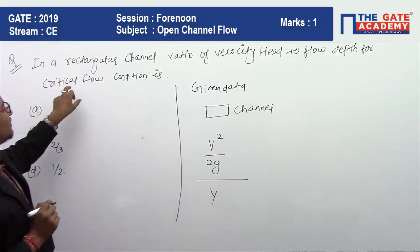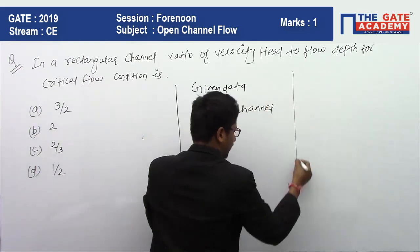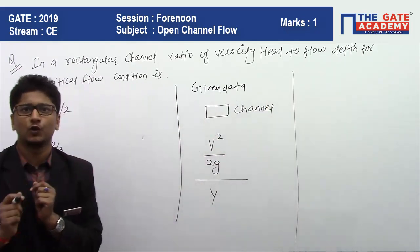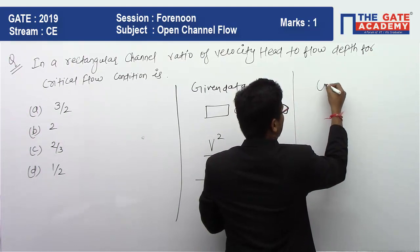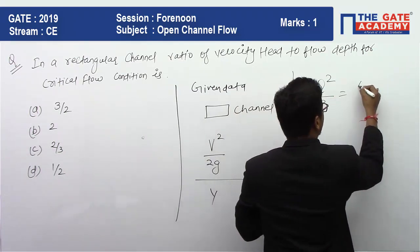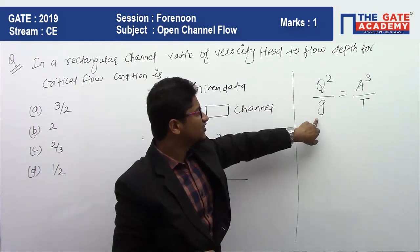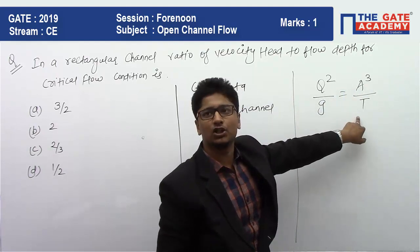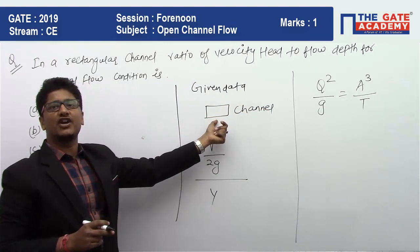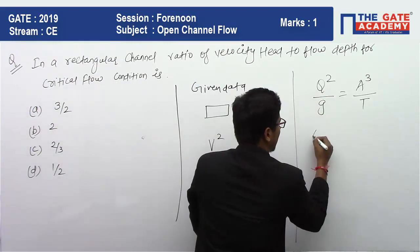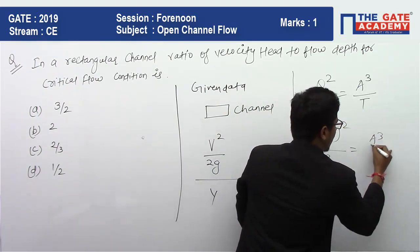We can use the critical flow condition from your OCF notes. For critical flow: Q² / g = A³ / T, where Q is discharge, g is acceleration due to gravity, A is the cross-sectional area, and T is the top width.